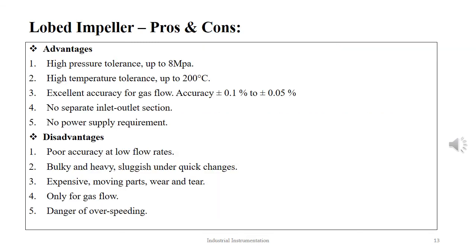The advantages of the lobed impeller are: very high pressure tolerance up to 8 MPa, very high temperature tolerance up to 200 degrees Celsius, excellent accuracy for gas flow about 0.1 to 0.05%, no separate inlet-outlet section, and no power is required for running this device.